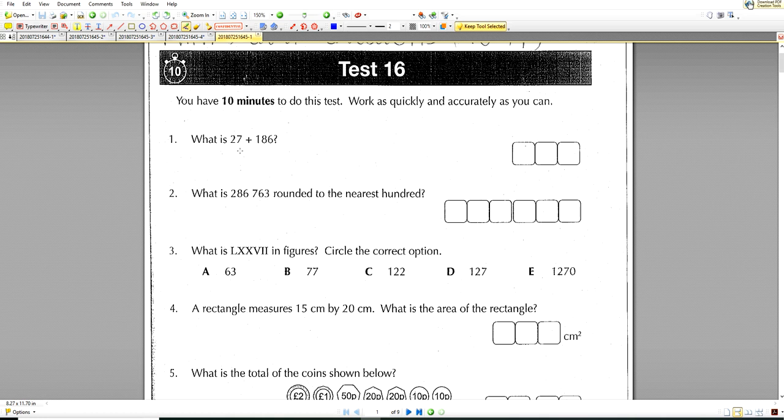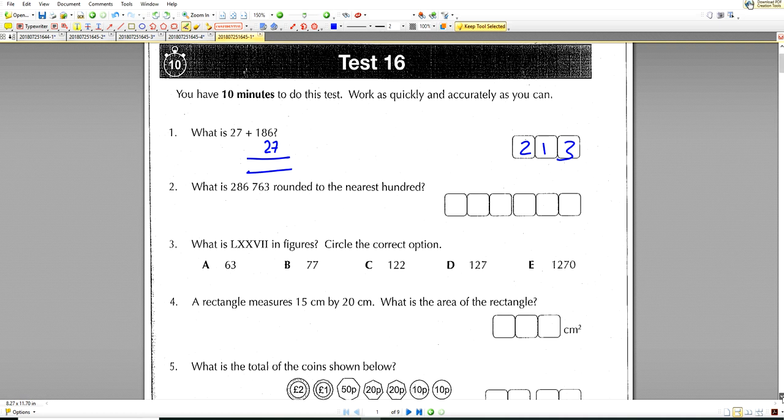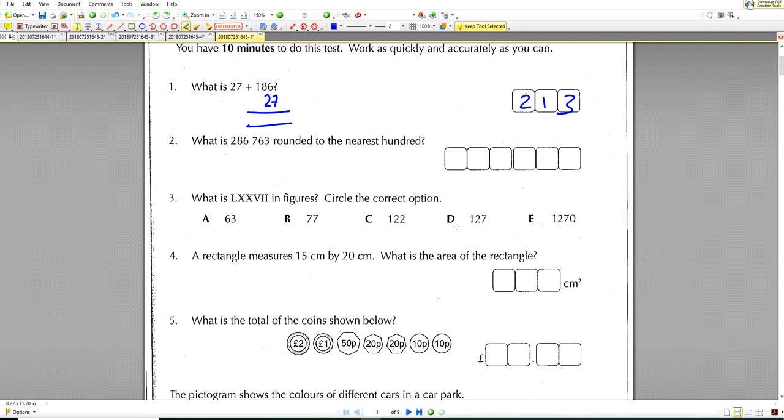So question number 1, we have what is 27 plus 186? We just do this in normal column method technique, and that will give you 2, 1, 3. So I'm skipping some of the ease, and rather than meticulously going through every single of the baby bits here, I'm just going to give you the answers for some questions.